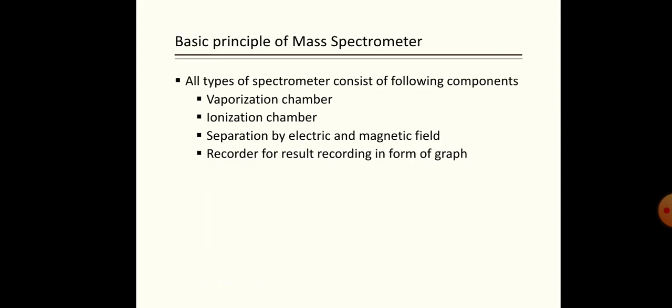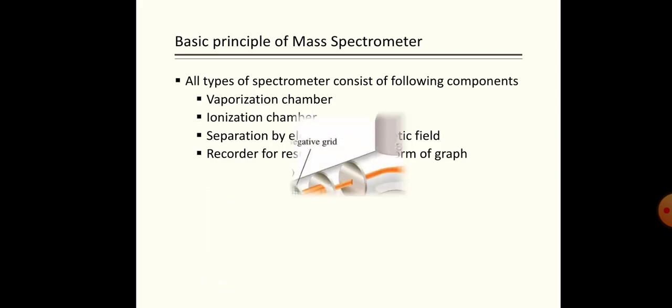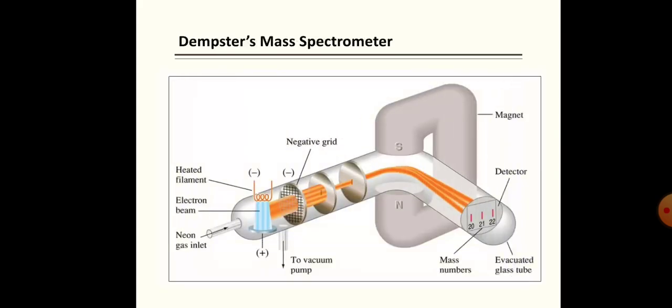The last part consists of a detector and recorder which detect isotopes and then record the result in the form of a graph. Here you can see the Dempster mass spectrograph diagram.